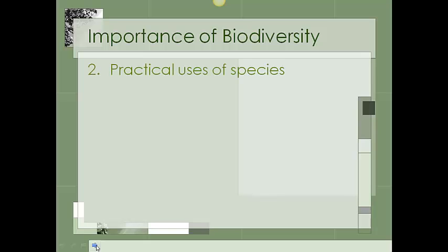The second important reason we are concerned about biodiversity is that plants and animals have practical uses for us as humans. A lot of organisms are the basis of prescription drugs — chemicals they carry in their body or system have led to the development of different prescription drugs. For example, aspirin originally comes from the bark of a tree. We got the formula for aspirin from tree bark. Tons of prescription drugs have come specifically from plants, but also some animals as well.